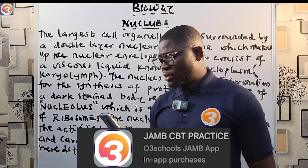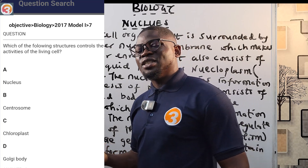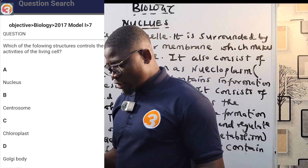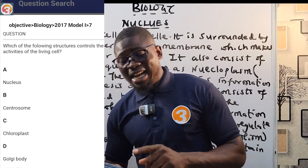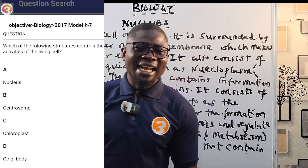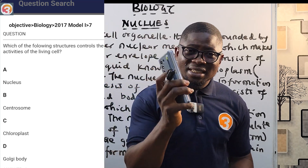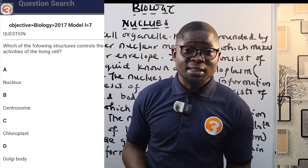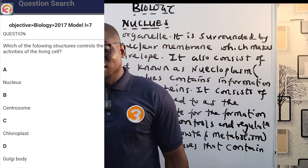It's a 2017 question, model one. The question says: which of the following structures controls the activities of the living cell? Options are: A — the nucleus, B — the centrosome, C — the chloroplast, D — the Golgi body. I'll answer this at the end of class so you stay and learn. If you do not learn, you will not understand how to answer the question. And if you do not practice past questions, you won't know how JAMB sets their questions.